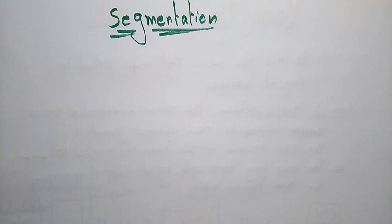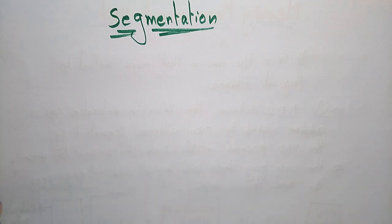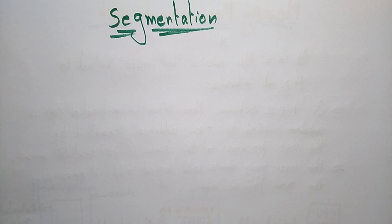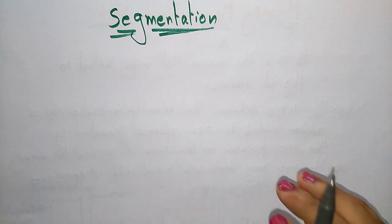Hi students, coming to the next topic in operating systems, that is segmentation. So what do you mean by segmentation? In the previous videos I explained about the paging concept. Now let us see segmentation. Segmentation is nothing but it is a small unit of a program. A program, whatever you have written, consists of a collection of segments — you can call them modules. So the modules present in the program are what we call segmentation.